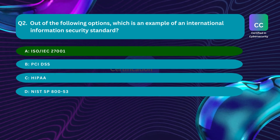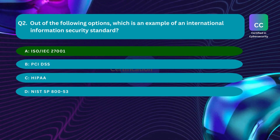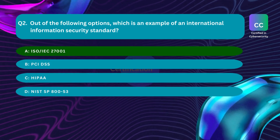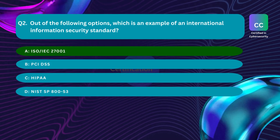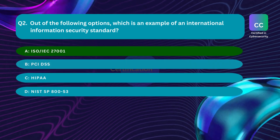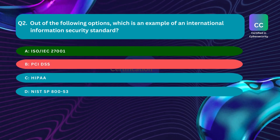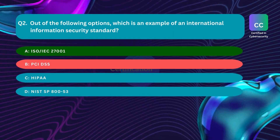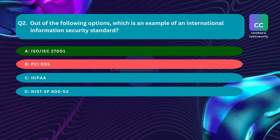ISO/IEC 27001 defines requirements an ISMS must meet, and provides companies of any size and from all sectors with guidance for establishing, implementing, maintaining, and continually improving an information security management system. PCI DSS — Payment Card Industry Data Security Standard — is a set of security standards designed to ensure organizations that handle credit card information maintain a secure environment.